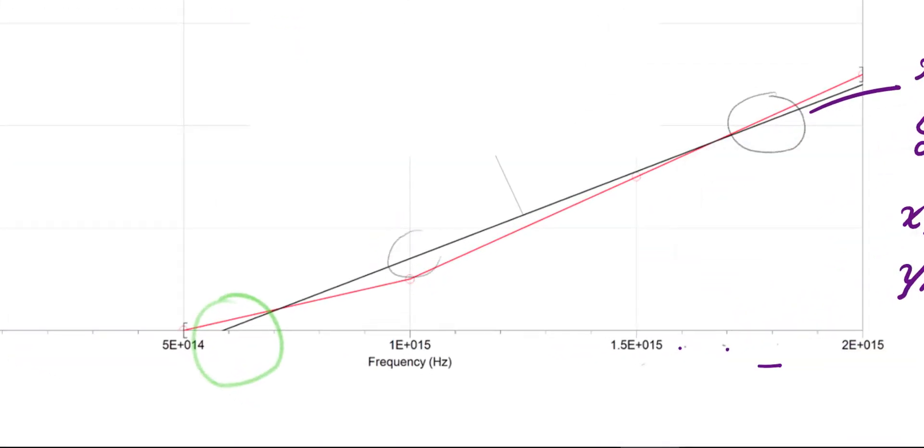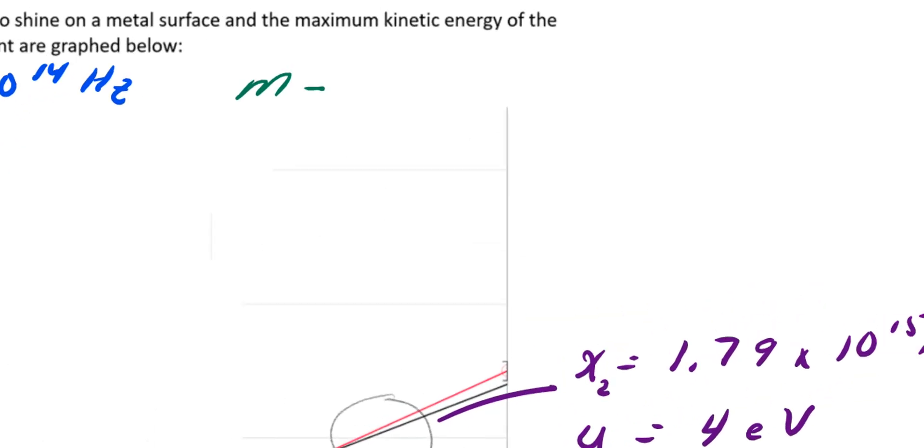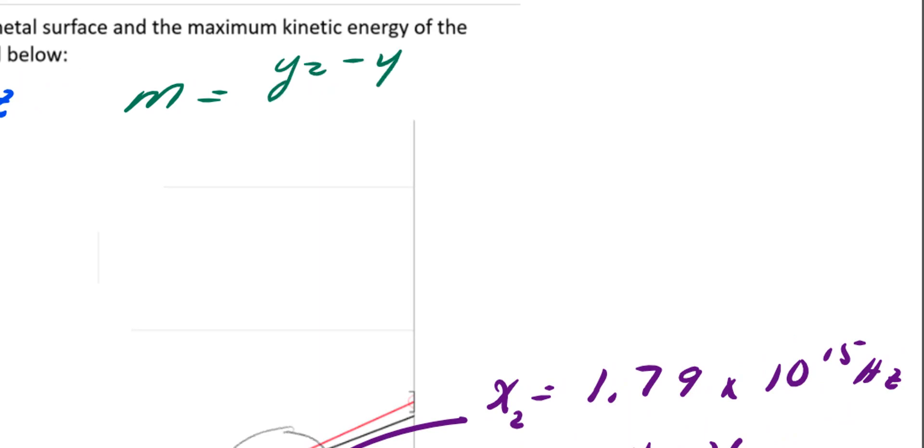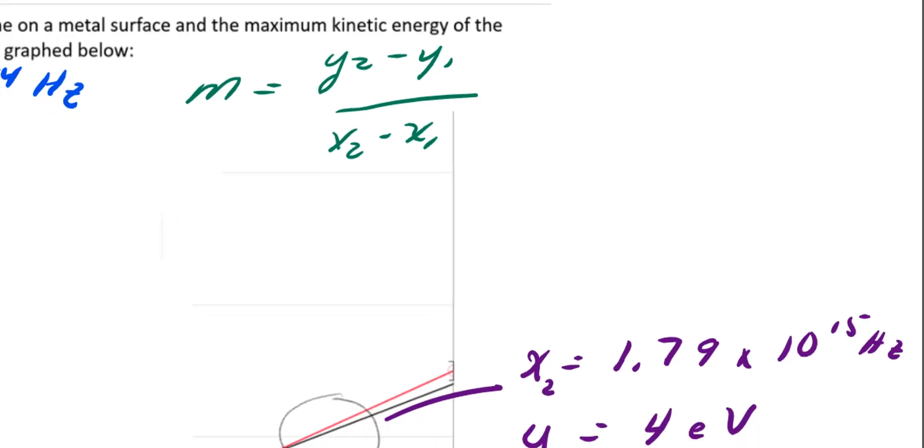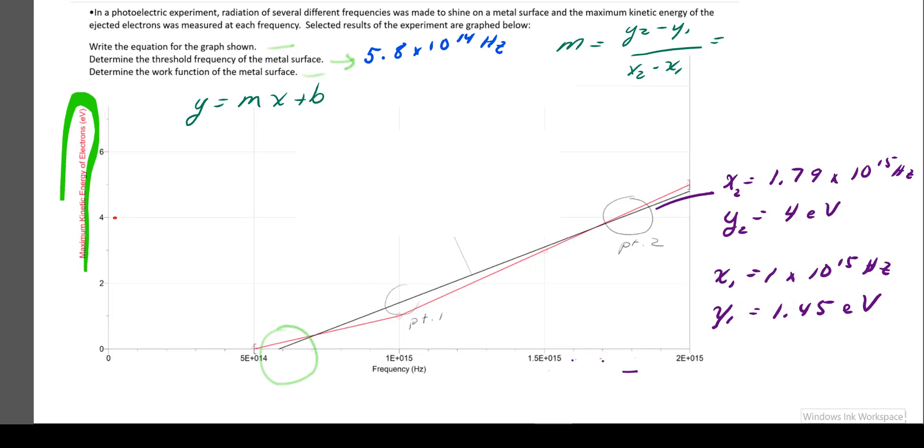To find slope, I'm going to need two data points, which I've already picked out. I'm just going to mark them again. I've got point 1 and point 2. It's a straight line on my graph, so it's going to be the general form of y equals mx plus b. Slope is rise over run, or y2 minus y1 divided by x2 minus x1. I've got those numbers written down, so now it's a matter of substituting them in and solving it.